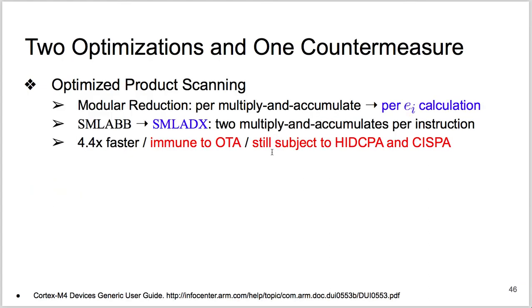Finale, we've also experimented our power analysis methods on the optimized product scanning. In this optimized version, we do not call modular reductions until the very end of each output coefficient calculation. Also, we use an SMLAD instruction, SMLADX, to replace SMLABB. This instruction completes two multiply and accumulate at a time. Now, online template attacks fail because it relies on a certain amount of coefficient leakage available. In contrast, chosen input SPA and horizontal in-depth CPA remain effective because they only target certain leaking power samples.